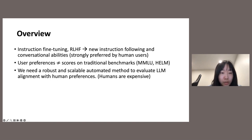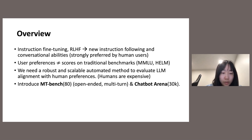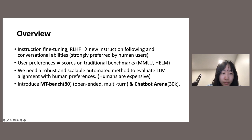Therefore, we need a robust and scalable automated method to evaluate LM alignment with human preferences, as human evaluation is expensive. We introduced two benchmarks with human ratings as the primary evaluation metric. MT-Bench contains open-ended multi-turn questions, manually designed and inspired by arena prompts. It contains 80 seed questions focused on multi-turn conversational and instruction-following ability, and we plan to enlarge this to MT-Bench 1K with 1000 questions. We also carefully designed questions to differentiate chatbots based on core capability, so MT-Bench includes not just chat but also math and coding categories.